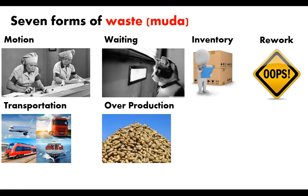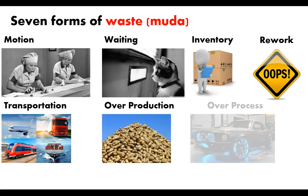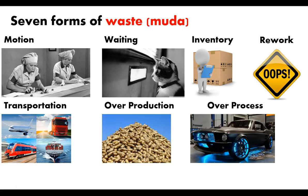Then there's rework — something going back for repairs, something sent back that wasn't created right the first time. And then there's overprocessing, not to be confused with overproduction. Overprocessing includes things such as creating a smoother surface finish than the customer required, putting paint on a product the customer never asked to be painted, or going through extra machining operations that the customer never requested — in other words, bad communications with the customer. And those are the seven types of waste.